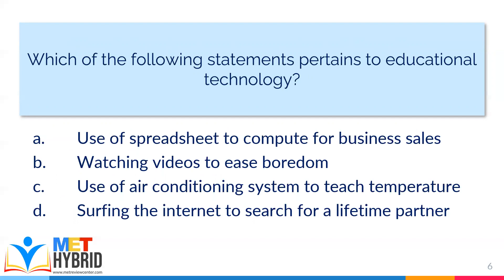Which of the following statements pertains to educational technology? A, use of spreadsheet to compute for business sales; B, watching videos to ease boredom; C, use of air conditioning system to teach temperature; D, surfing the internet to search for a lifetime partner. The answer is letter C, use of air conditioning system to teach temperature. Educational technology is the application of technology in the teaching-learning process. Only letter C uses technology to transfer knowledge; the others are used for business, to ease boredom, or to search for a partner — none related to education.